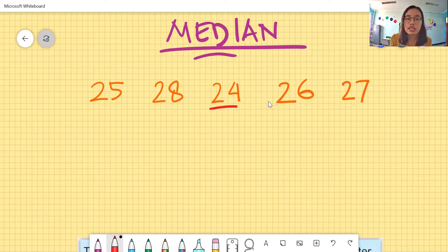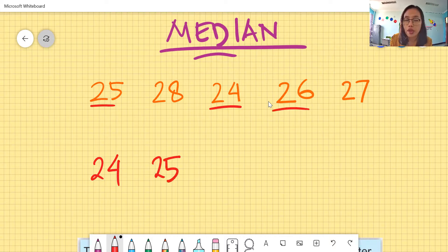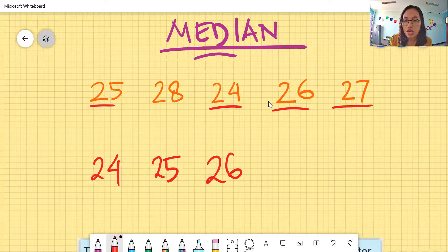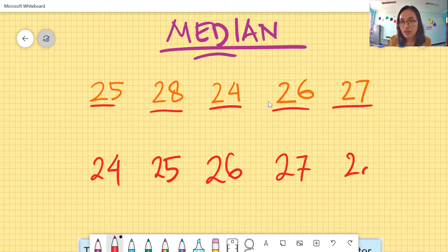The least is 24. So I have 24 in here. And then what's the next number? 25 semakin besar ya. And then 26 and 27 and the last is 28. So we have numbers in order from the least to the greatest. Kita sudah punya bilangan yang terurut dari yang terkecil sampai yang terbesar.